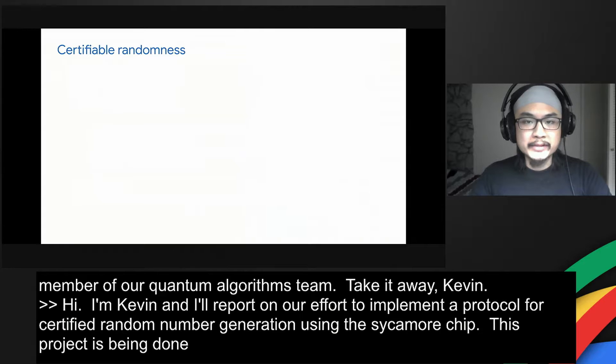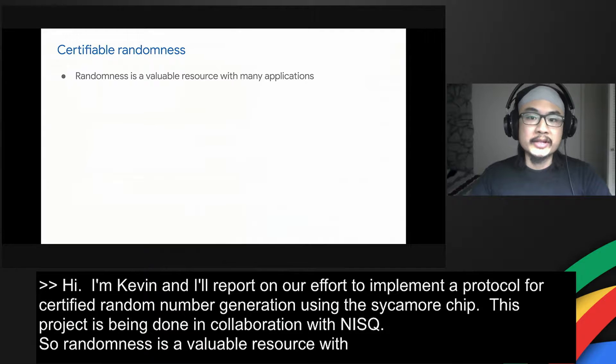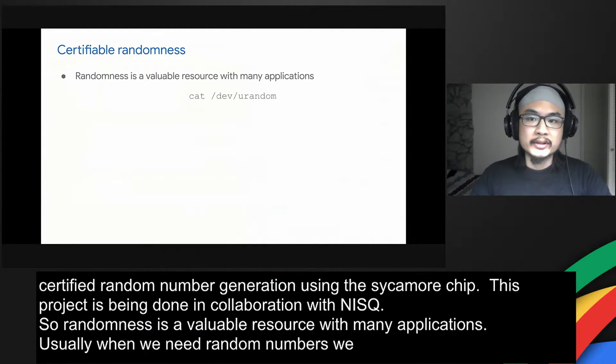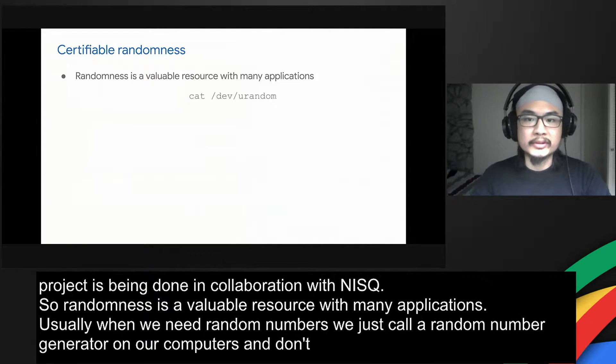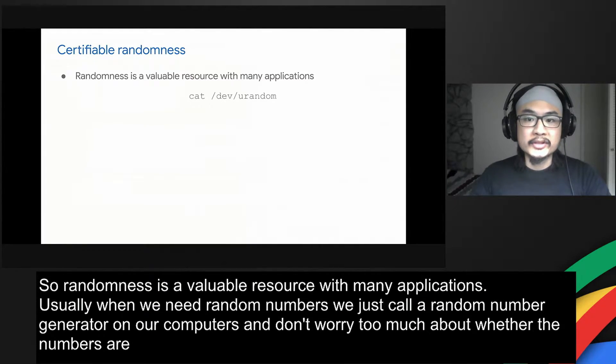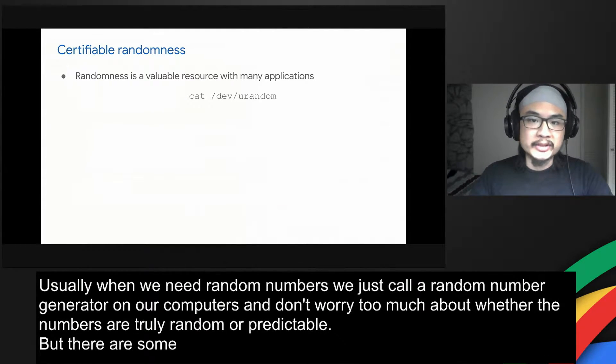Randomness is a valuable resource with many applications. Usually when we need random numbers we just call a random number generator on our computers and don't worry too much about whether the numbers are truly random or unpredictable. But there are some situations, for example in cryptography or lotteries, where true randomness would be desirable.